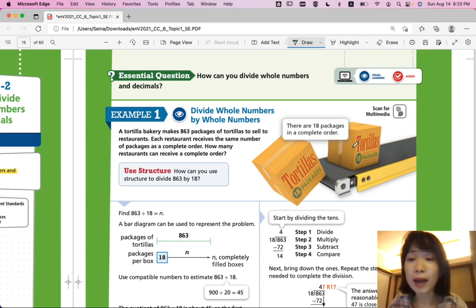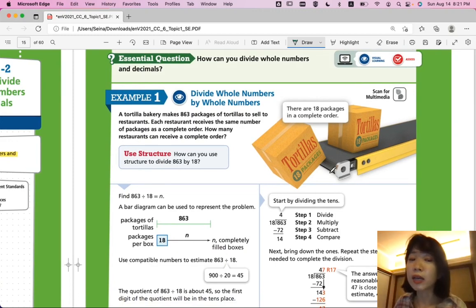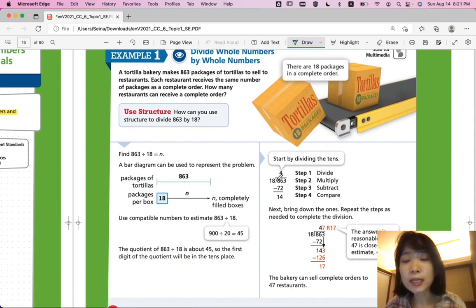There are 18 packages in a complete order. So, when we're counting packages, if we have 17 packages, is that a complete order? No. If you have 17 packages, you're almost there, but it's not a complete order. So, you do not count 17 packages as one complete order. Only when you have exactly 18, you can count it as a complete order. So, you're going to divide 863 by 18 to see how many complete orders can we have for 863 packages of tortillas.